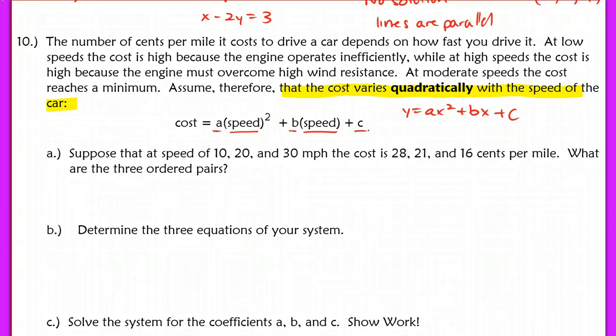We've got another set of data here that says suppose that at a speed of 10, 20, and 30 miles per hour, the cost is 28, 21, and 16 cents per mile. So it asks, what are the three ordered pairs? The first thing I want to do is define my variables. Notice how this is ax squared. So x here is my speed, and y equals cost.